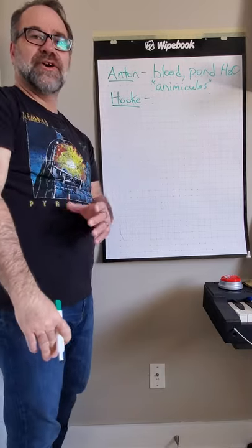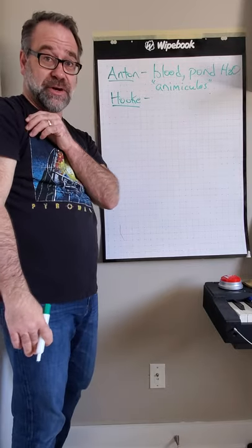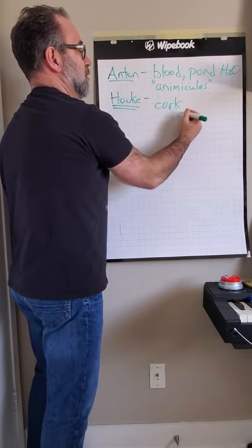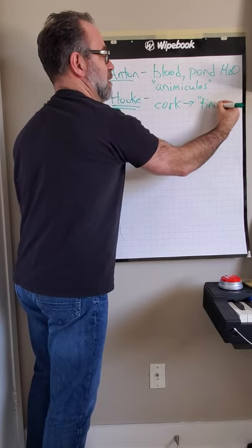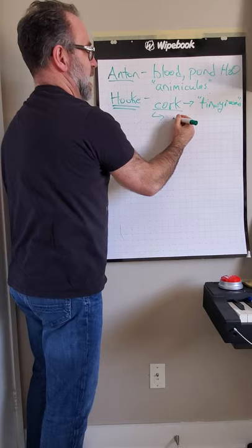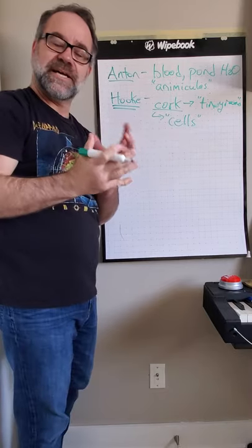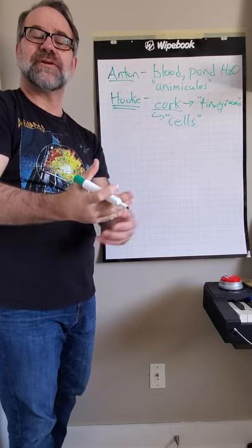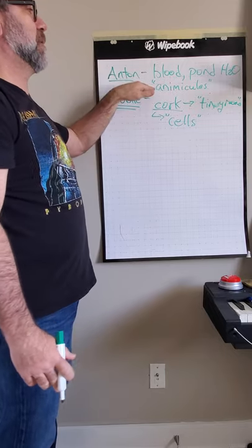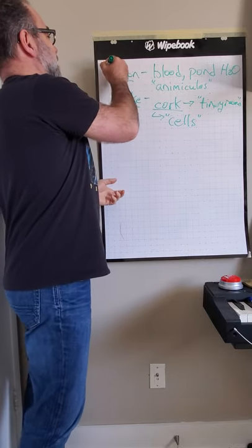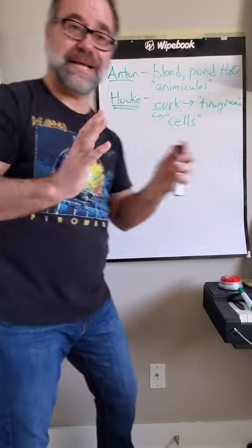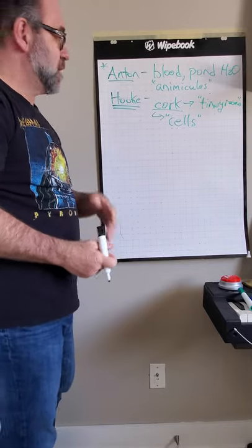Anton von Leeuwenhoek, he looked at things like blood, pond water, and he developed this term 'animalcules.' What he did was he named all the little single-celled organisms that he saw floating around in the pond water; he named them animalcules. Hooke is one of the guys that observed cork, and under the cork he noticed that they had tiny rooms. He was the guy that actually came up with the word 'cells' because the cork cells looked like their own little rooms when they were all together - tiny little compartments. We give Robert Hooke credit for that. Anton von Leeuwenhoek gets credit for seeing the single-cell organisms, and really he gets more credit as being the inventor of the more high-powered microscopes.